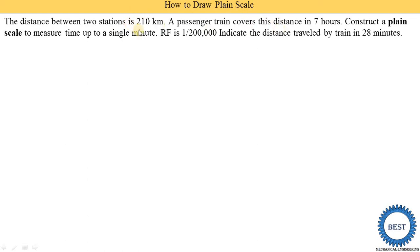The distance is 210 kilometers, so the unit of distance is in kilometers, and the unit of time is in hours. Since 210 kilometers is covered in seven hours, in one hour the train travels 30 kilometers.